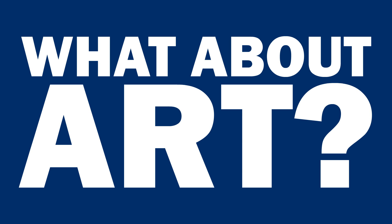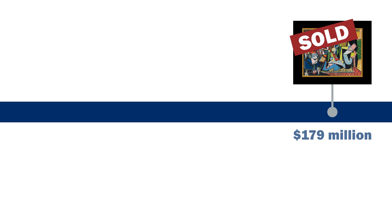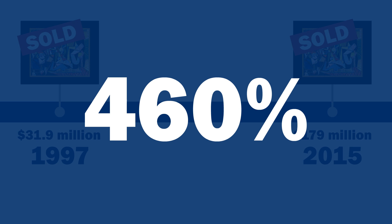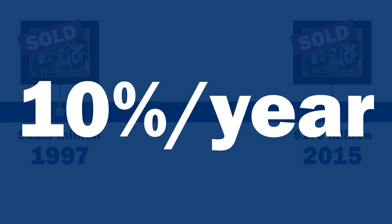What about art? A given piece of art may not trade for years, decades, or centuries. For example, the Picasso painting that sold for $179 million in 2015 was purchased in 1997 for $31.9 million. The percentage change in the price, or return, on that art purchase was just over 460% over those 18 years, or roughly 10% per year.